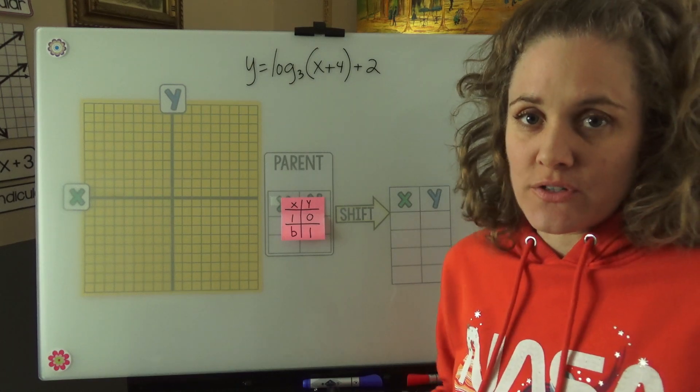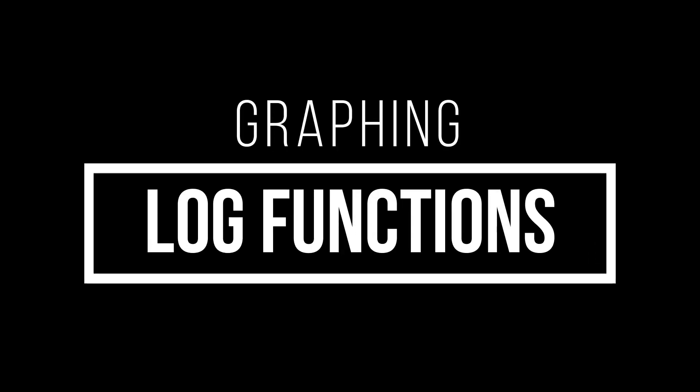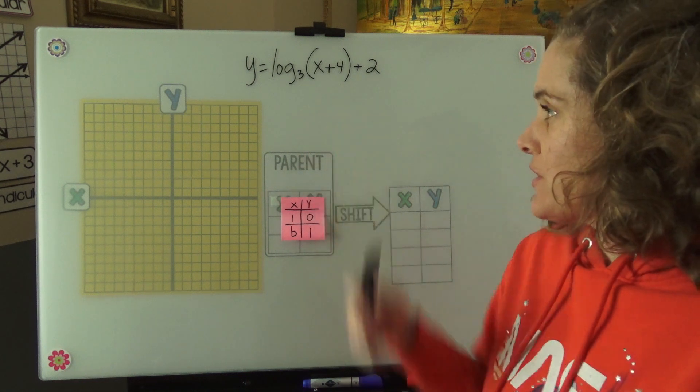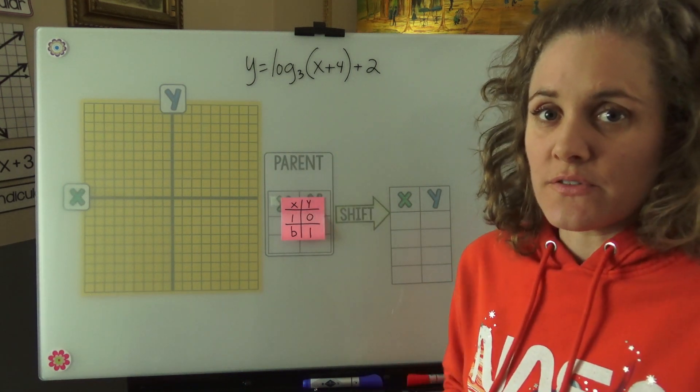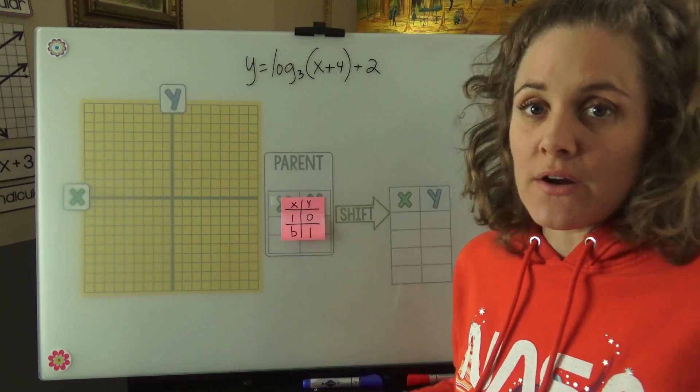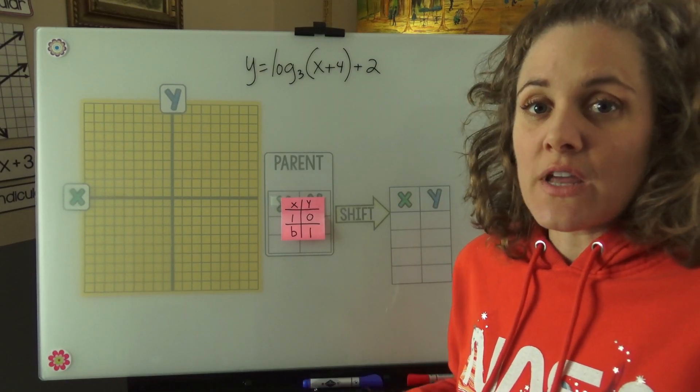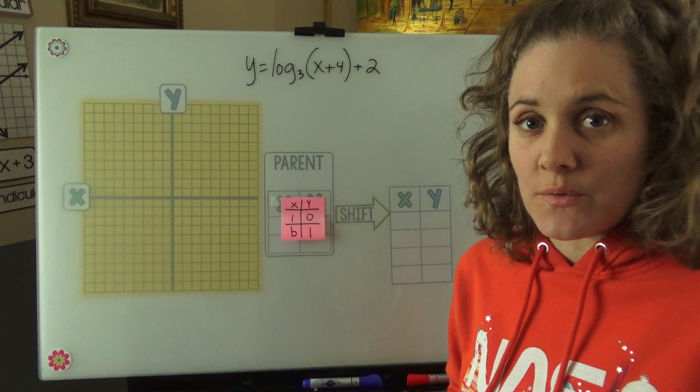Today we're going to be graphing log functions. I chose a log function already, and we're going to walk through the steps. The first thing we'll do is create a parent table, then we'll shift the table, and then we'll graph all the points that we shifted.